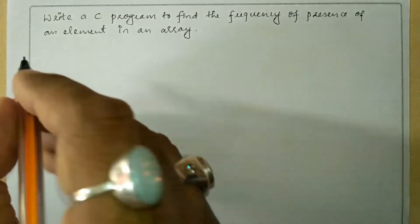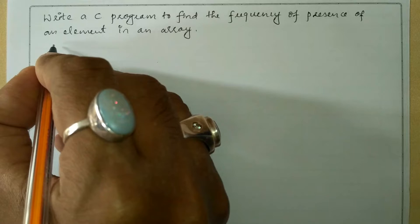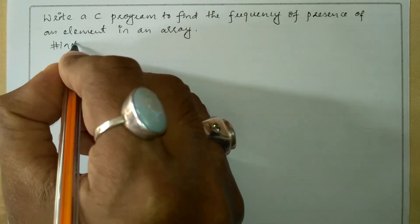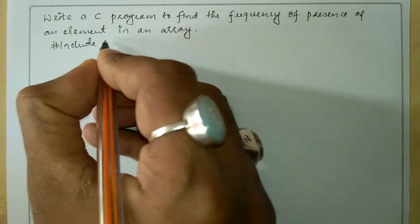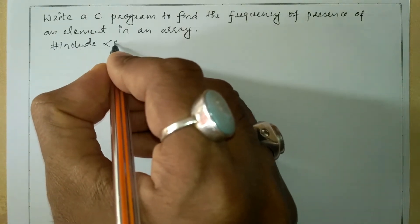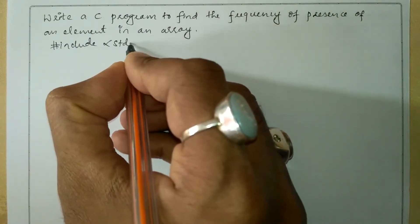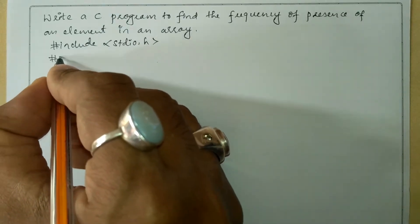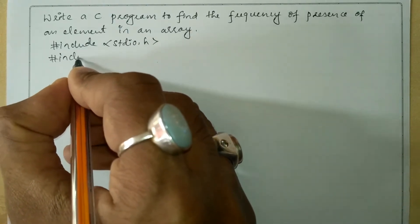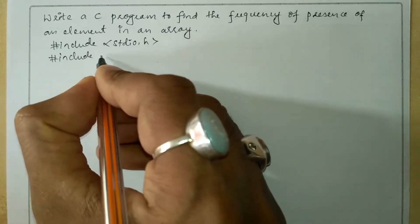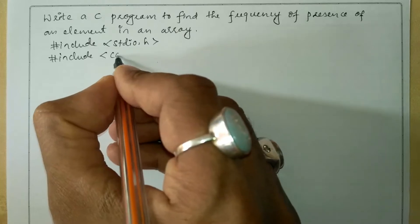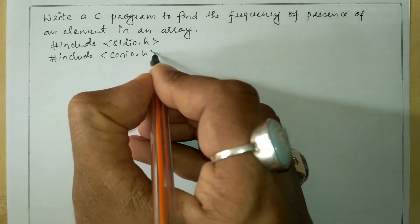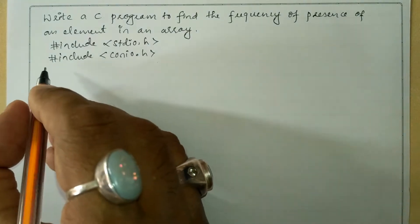Let us write the preprocessor directives: #include in angle brackets we write stdio.h header file. The next preprocessor directive: #include in angle brackets we write conio.h header file.